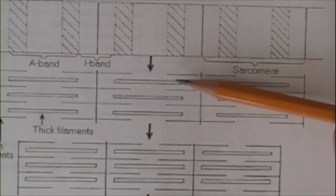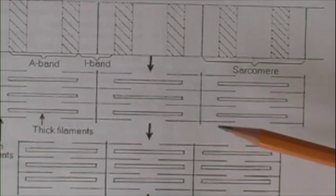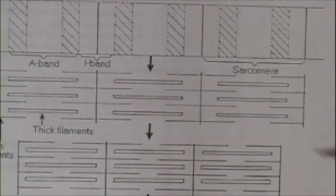Now the thick filaments are made of molecules of myosin. The thin filaments, on the other hand, are composed of three types of molecules. They contain actin, they contain troponin, and another molecule called tropomyosin.